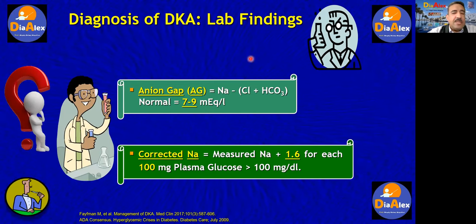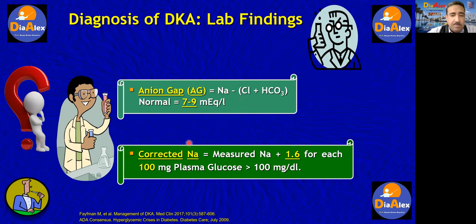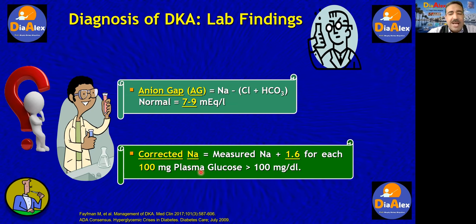Two important definitions to remember: anion gap and corrected sodium. Anion gap means sodium level minus the sum of chloride and bicarb; if it's more than 10, this means wide anion gap. Corrected sodium is important in patients with marked hyperglycemia and equals measured sodium plus 1.6 for each 100 mg of blood glucose above 100 mg/dL.